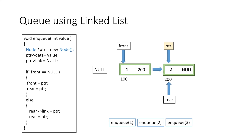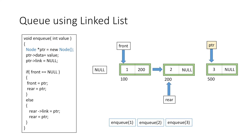If we enqueue another element 3, we again create a new node, ptr holds its address, we set the data part to 3 and link part to null. We then make the link part of rear equal to ptr — so the second node's link now holds address 500 — and we move the rear pointer to the newly created node, which is now the end of the queue.